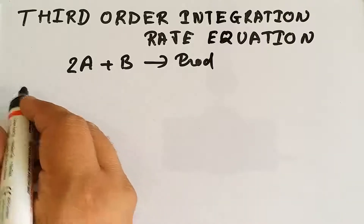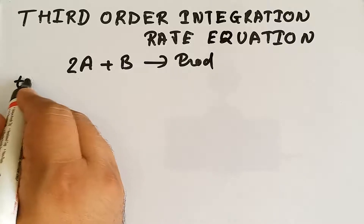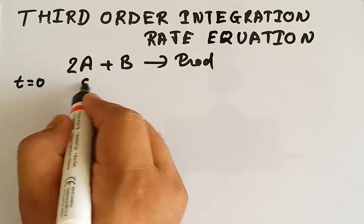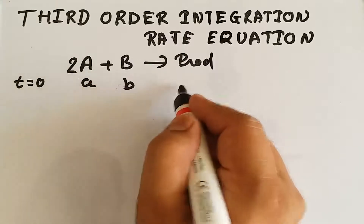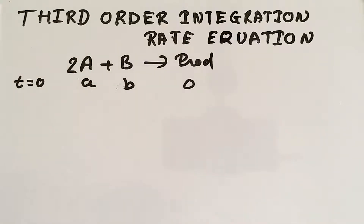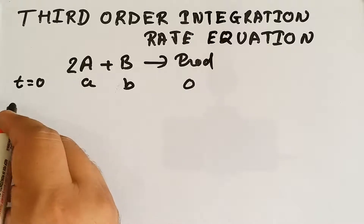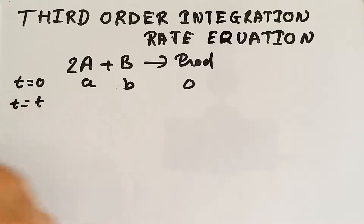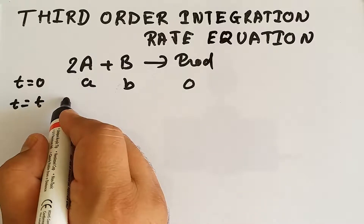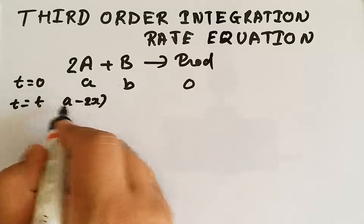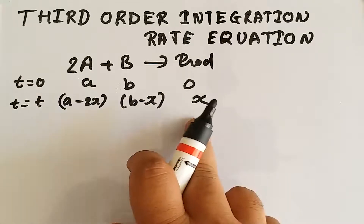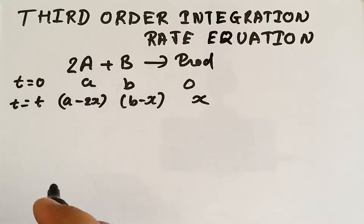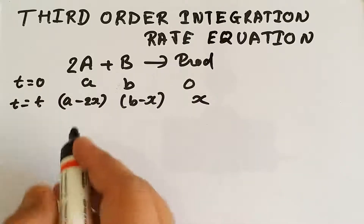Suppose at time t = 0, the concentration of A is 'a', concentration of B is 'b', and the concentration of product is zero. At any time t, a certain amount of product is formed, so the concentration of A becomes a − 2x, concentration of B becomes b − x, and x is the concentration of product formed.